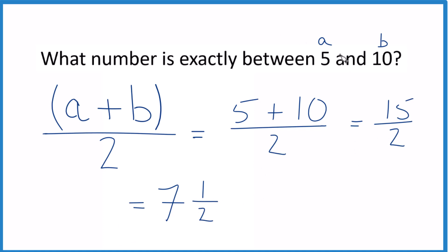So the number exactly between 5 and 10 is either 15 over 2 or 7 and a half. And these are the same value here.